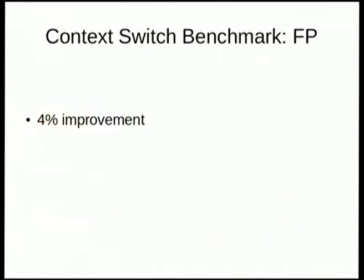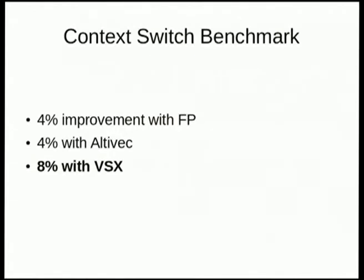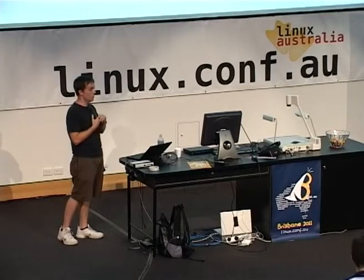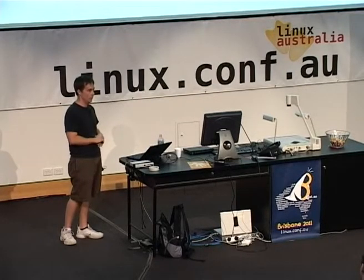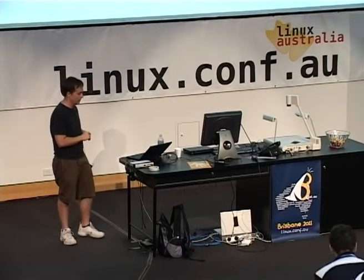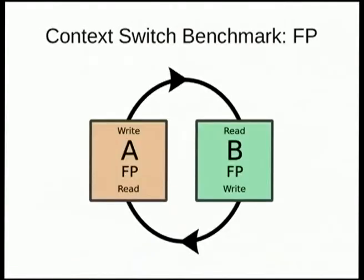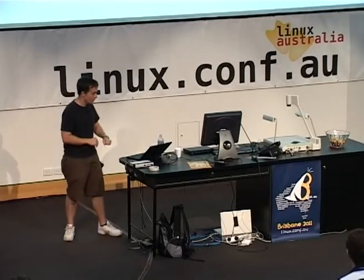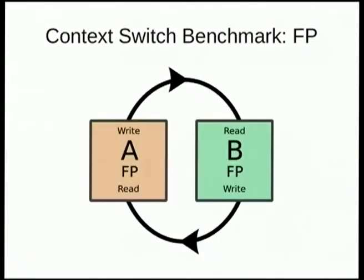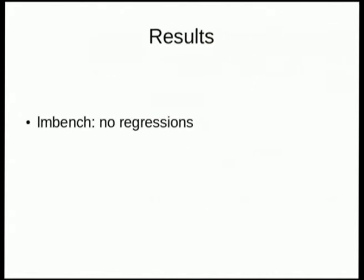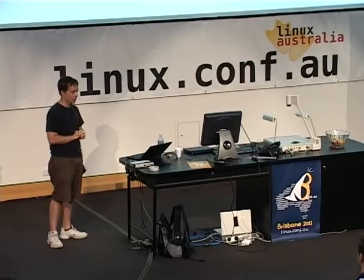With floating point we get a 4% improvement. With Altivec we can get another 4%. And with VSX we can get 8%. It doesn't seem like much, but user space gets this for free — they don't have to do anything — and we're just reducing kernel overhead, which is always a good thing. If we put floating point in both sides, we're still going to take the trap and still have to save and restore. In that case: no performance improvement, but no regressions either. I also ran LMBench — no regressions, and no significant performance improvements either.